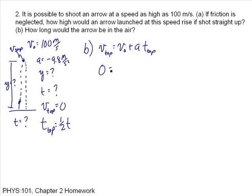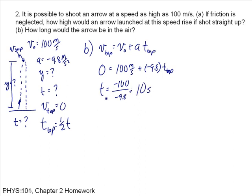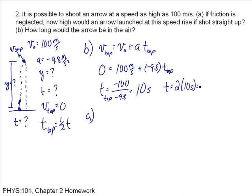So zero equals 100 meters per second plus minus 9.8 times T at the top. Solving for T gives T equals minus 100 over minus 9.8, which is approximately 10 seconds — that's T at the top. It takes 10 seconds to go from the bottom to the top. That's part B. The total time in the air is twice this value, so 20 seconds.